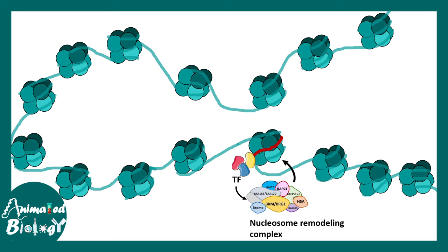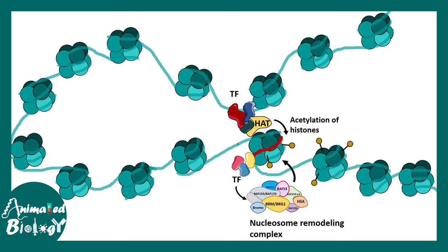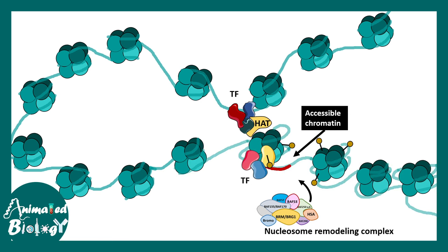Transcription factors can also interact with enzymes like histone acetyltransferases, which can modify histones. Histone acetyltransferases put acetyl marks on specific histones, and as a consequence there is a change in chromatin architecture — the chromatin becomes more accessible because DNA is now loosely packing the nucleosome. Transcription factors can then access the promoter region, recruit polymerase, and polymerase finds it easier to move along the gene body.